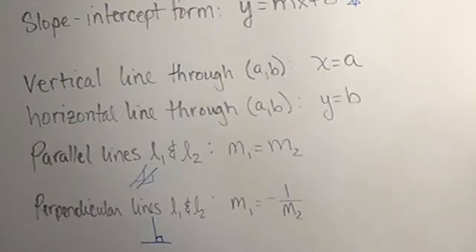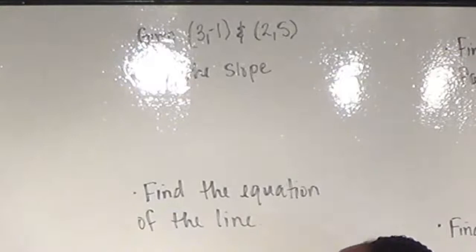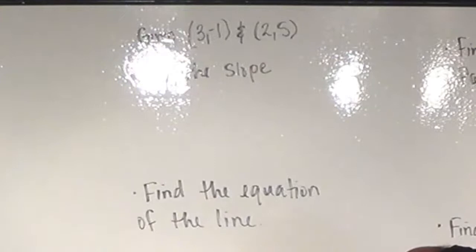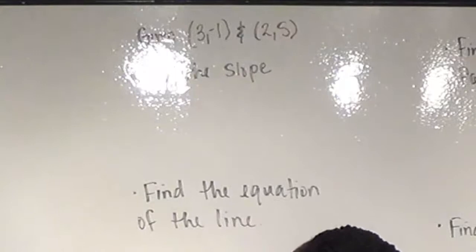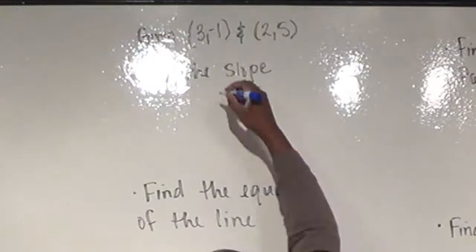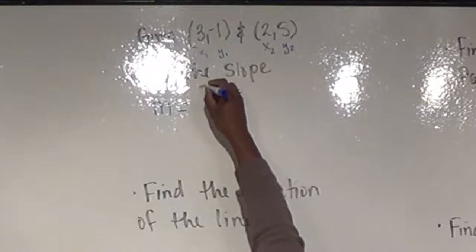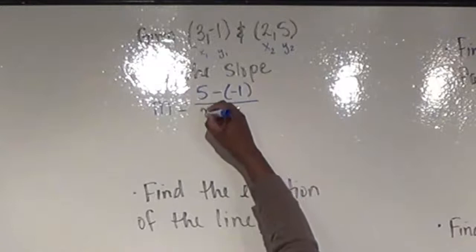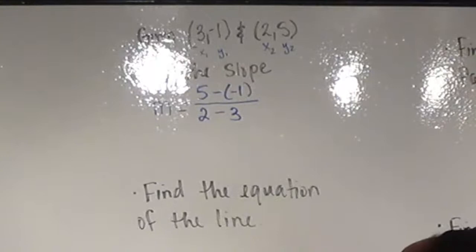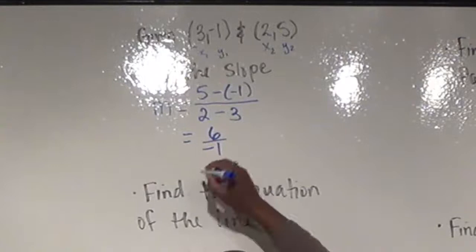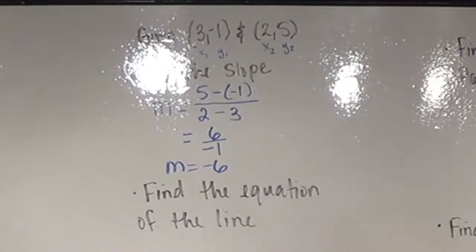Let's look at some examples. Given two points, let's find the slope of the line between them. It doesn't matter which point you use first, but be consistent. Calling this first point (x₁, y₁) and the second (x₂, y₂), to get our slope we calculate the change in y's: 5 minus negative 1, over the change in x's: 2 minus 3. That gives us 6 over negative 1, so our slope is negative 6.